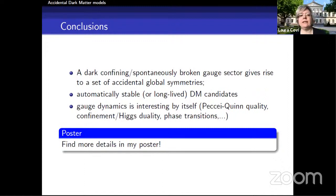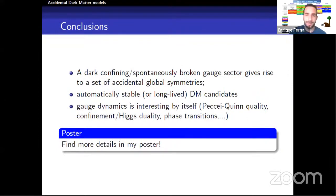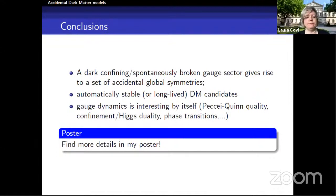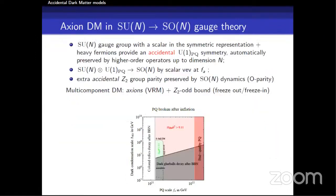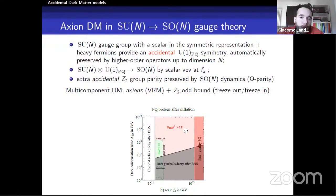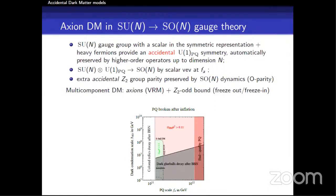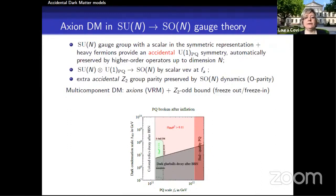In the Q&A, Michele asked whether the PQ symmetry mentioned relates to a QCD axion. The speaker confirmed: some of the fermions are colored under QCD, so they provide the correct anomaly coefficients for a QCD axion.